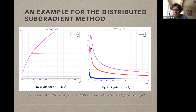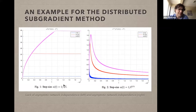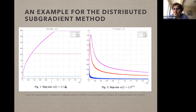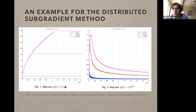This characterizes exactly when the Nedich-Ozdaglar scheme is and is not network independent. But it's a very unsatisfying answer because you really want network independence for the 1/sqrt(t) step size, since that is the optimal rate. You almost get it — 1/t^0.501 is network independent, but not 1/t^0.5. I don't think that's a fundamental limit; I think it just needs a different method.